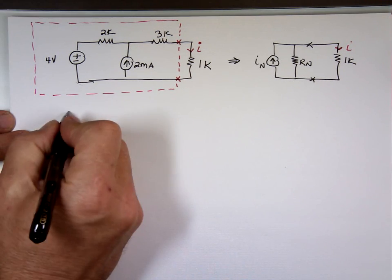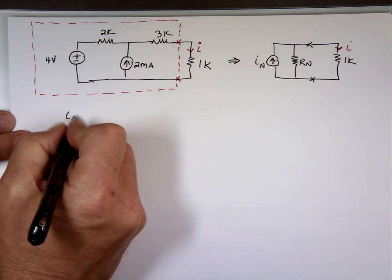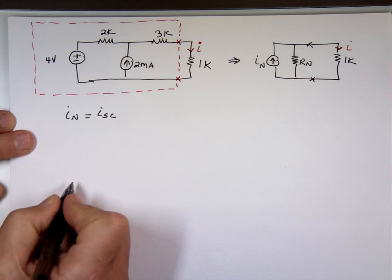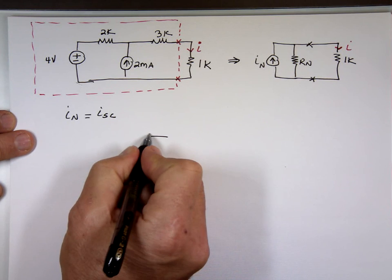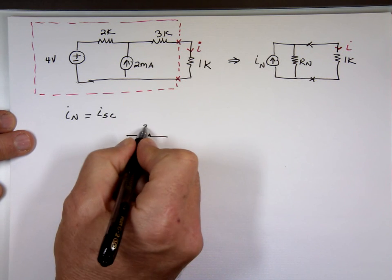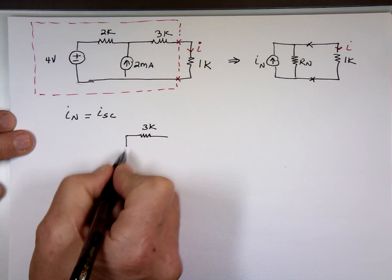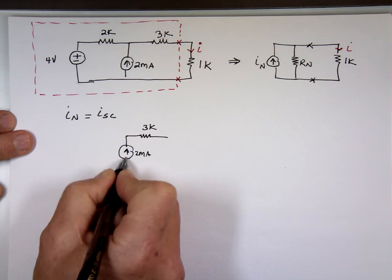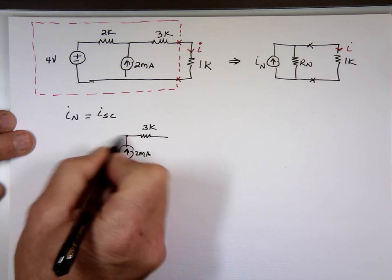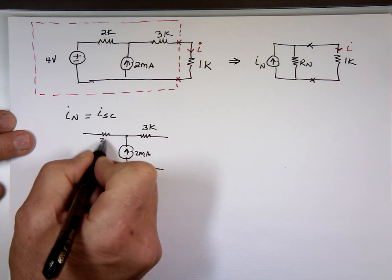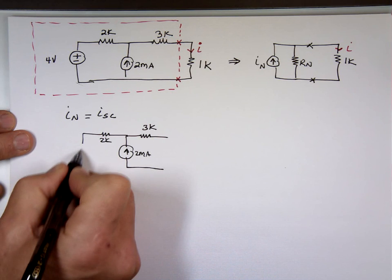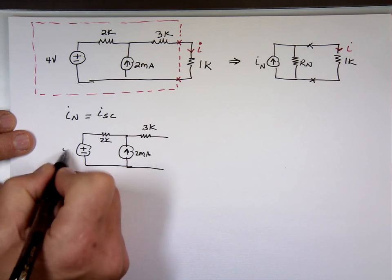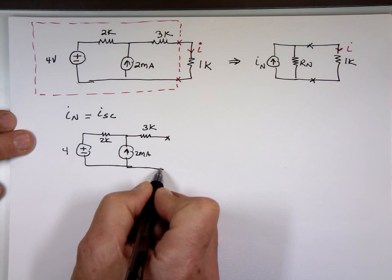Let's find I Norton. We said I Norton can be found by I short circuit. So here's my circuit: 3k, 2 milliamp, 2k, plus-minus 4 volts. Now we're going to put a short circuit — a wire right there. That current through the wire is I short circuit.